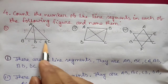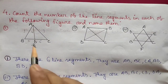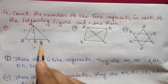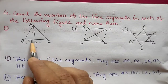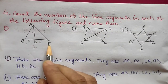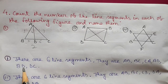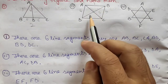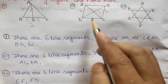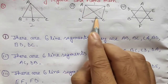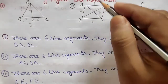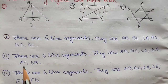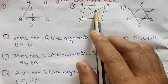The line segments in the first figure are: AB, BC, CA, AD, BD, and DC. For the second figure — a quadrilateral — we count: AB one, BC two, DC three, DA four, and the two diagonals AC five and DB six. So there are also six line segments: AB, BC, CD, DA, AC, and DB.